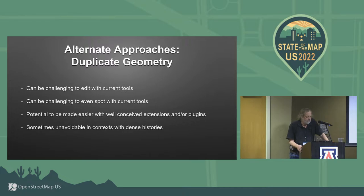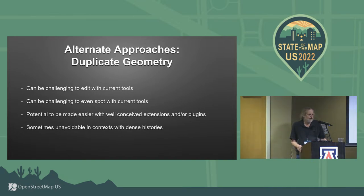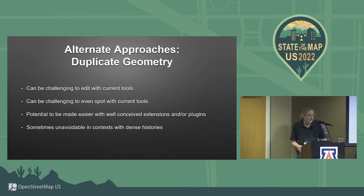Some alternate approaches. One that people advocate for is duplicate geometry — having the ways appear multiple times with the same set of nodes and then tagging the different ways with different tags. It can be challenging to even spot that somebody's doing this with current editing tools. You have to know how to use filters in JOSM to puzzle out what's going on. It has the potential to be made easier with well-conceived extensions or plugins, but we don't really have those now. Sometimes it's unavoidable with dense histories — I mostly don't use this approach, but I've had one or two problems where I don't find much choice.